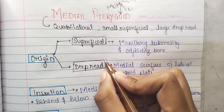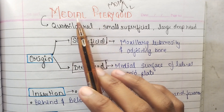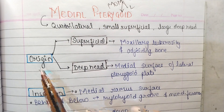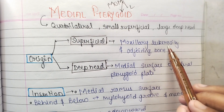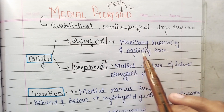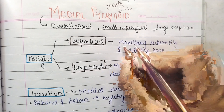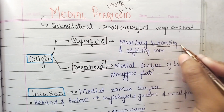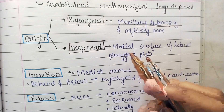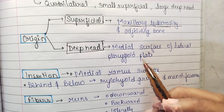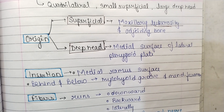Now let's talk about its origin. The superficial head of the medial pterygoid muscle originates from the maxillary tuberosity and the adjoining bones. The deep head originates from the medial surface of the lateral pterygoid plate.